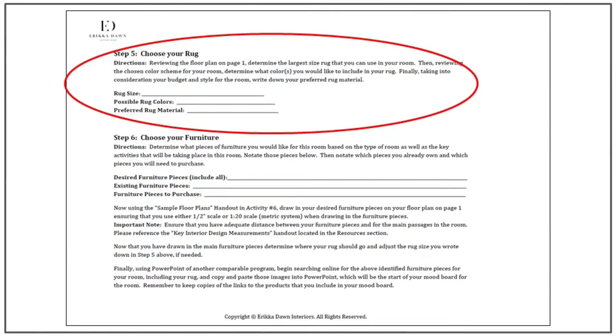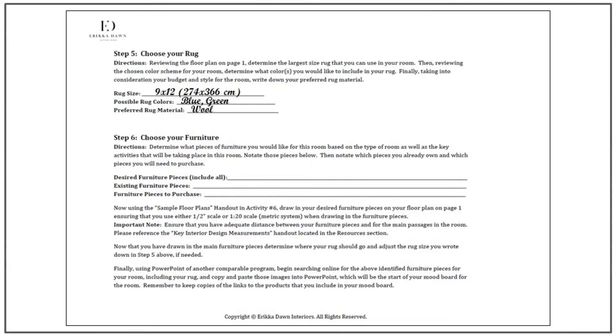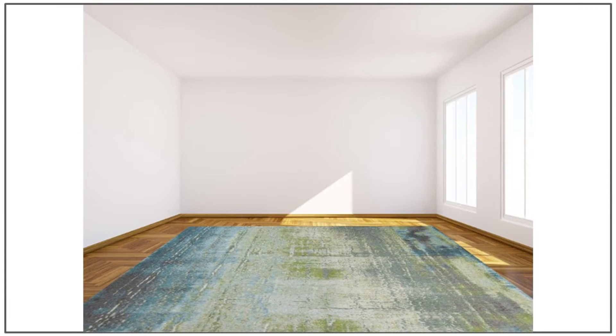Choosing our rug is the next step. This is a large room and can easily accommodate a 9 by 12, or 274 by 366 centimeter rug, so that is what I'll be looking for. Based on my color scheme, I'm going to select a rug that incorporates the accent colors, and for the material, I've decided on a wool rug. I've found this contemporary abstract rug, and I think it's going to work really well in my design.